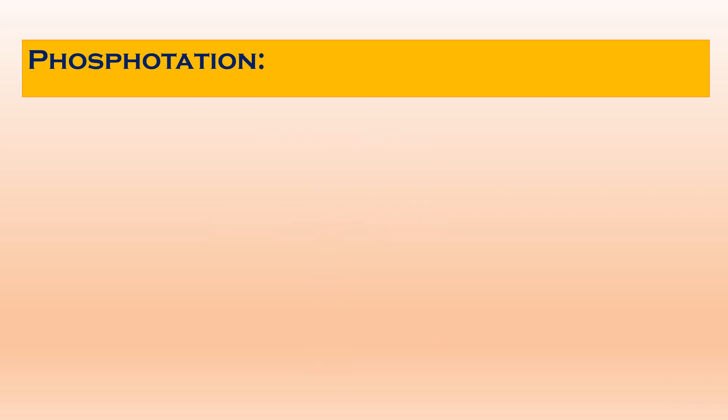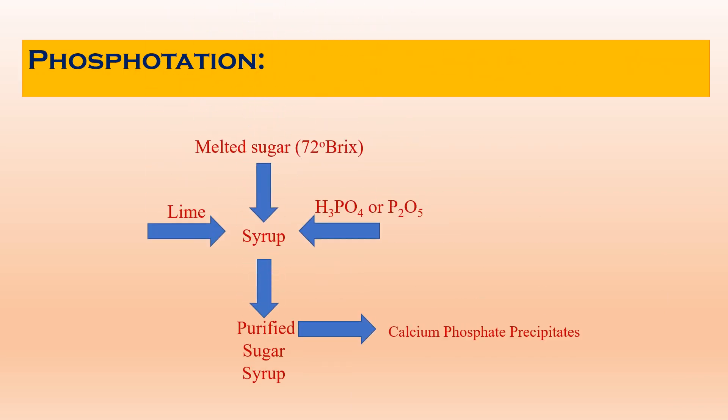In phosphatation, melted sugar is treated with lime and phosphoric acid. The reaction between lime and phosphoric acid forms calcium phosphate precipitates, which removes the impurities from the sugar syrup, and we obtain the purified sugar syrup.